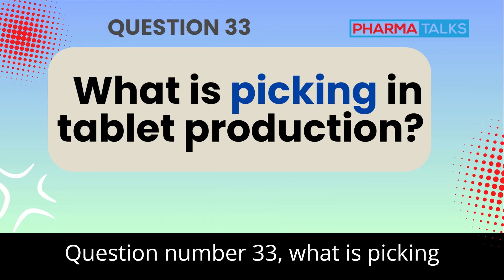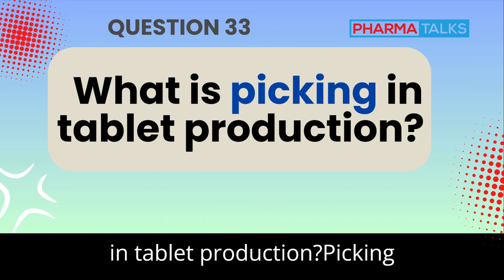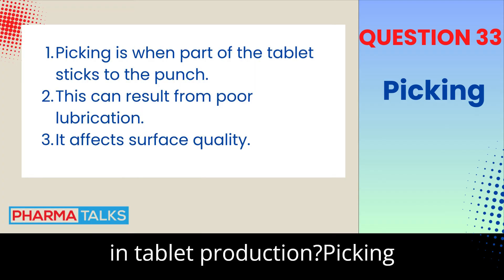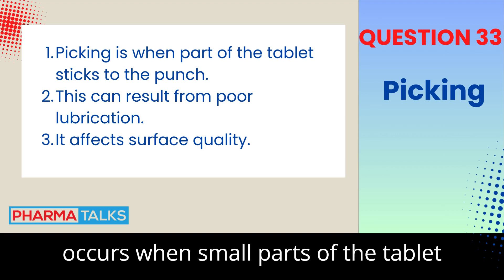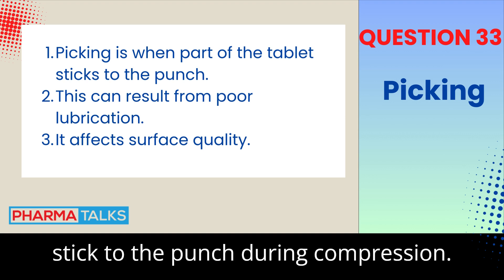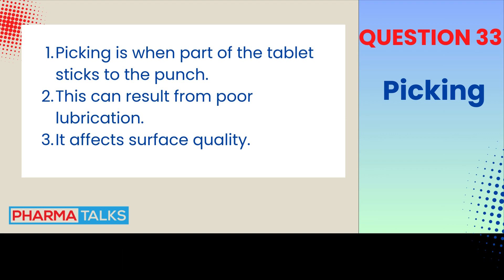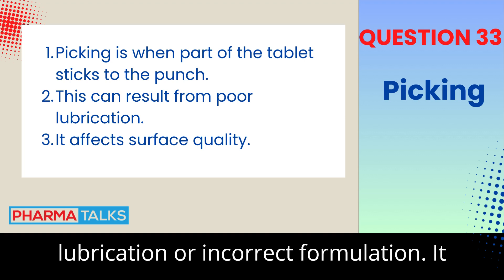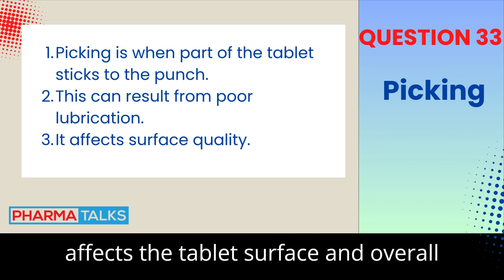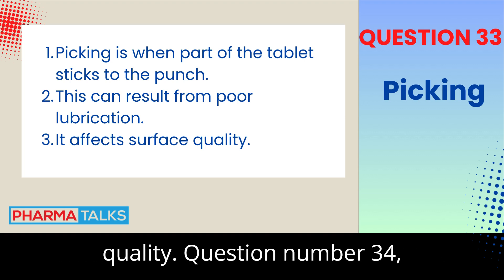Question 33: What is picking in tablet production? Picking occurs when small parts of the tablet stick to the punch during compression. This can be due to insufficient lubrication or incorrect formulation, and affects the tablet surface and overall quality.